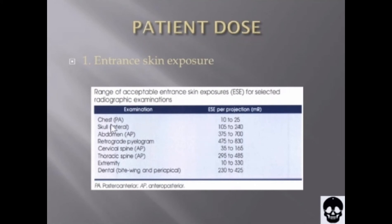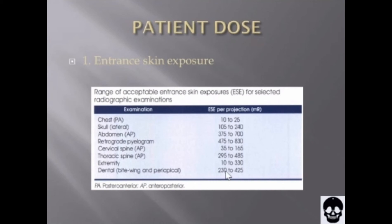For example, acceptable entrance skin exposures for selected radiographic examinations include: chest PA at 10 to 25 milliroentgen; and skull, abdomen, retrograde pyelogram, cervical spine, thoracic spine, extremity, and dental bite-wing or periapical at 230 to 425 milliroentgen.